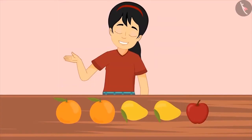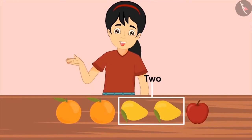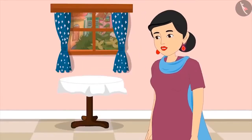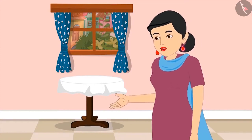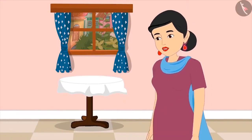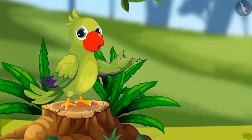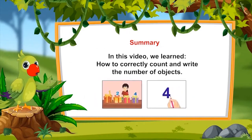Pinkie corrects herself and brings one and two mangoes. The mother confirms: yes, very good. Now quickly put the rest of the fruits back inside and wash your hands. In this video we learned how to correctly count and write the number of objects. I hope you all have understood the counting from one to five properly. Bye, friends.